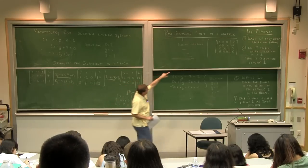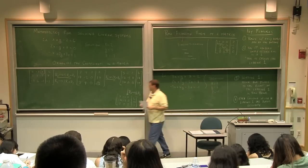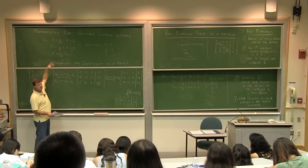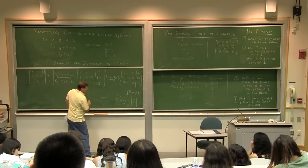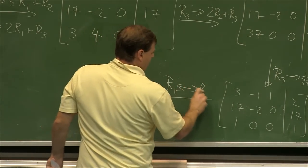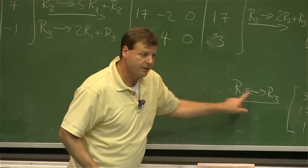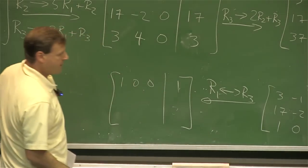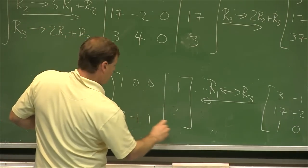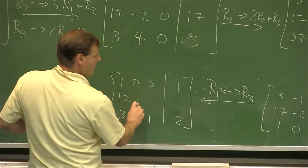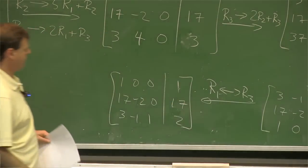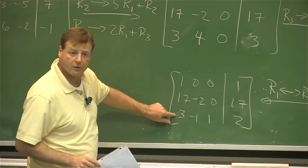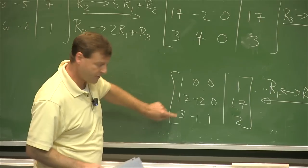Now I'd like to have 1, 0, 0 in the top. This row is 1, 0, 0, 1, so let me move it to the top — that's just like switching equations. So I'll switch row 1 and row 3. Now I have 1, 0, 0, 1 on top; 3, negative 1, 1, 2 on the bottom; and the second row stays the same. Now I can use this 1 to get rid of the 17 and the 3.